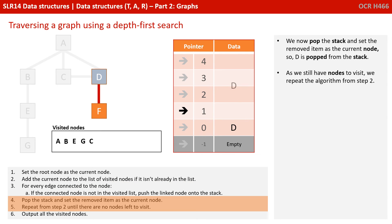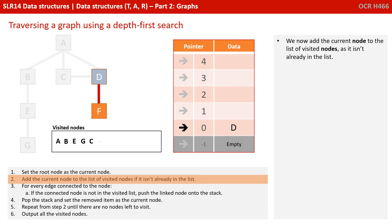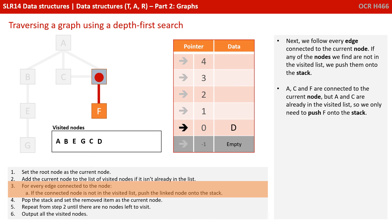We now pop the stack and set the removed item as the current node, so D is popped. As we still have nodes to visit, we repeat the algorithm from step 2. We add D to the list of visited nodes. A, C and F are all connected to the current node, but A and C are already in the visited list, so we only need to push F onto the stack.